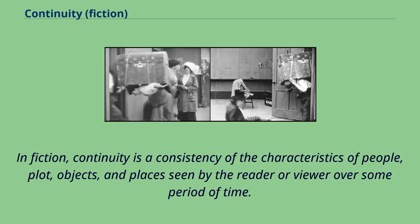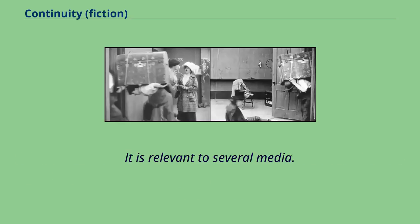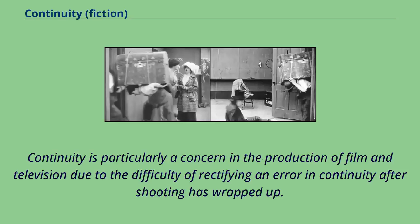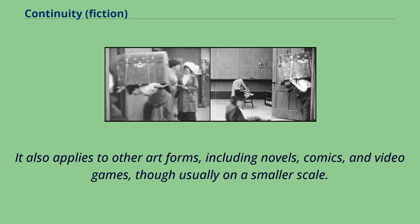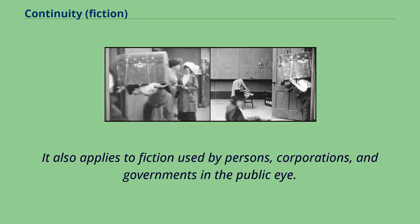In fiction, continuity is a consistency of the characteristics of people, plot, objects, and places seen by the reader or viewer over some period of time. It is relevant to several media. Continuity is particularly a concern in the production of film and television due to the difficulty of rectifying an error in continuity after shooting has wrapped up. It also applies to other art forms, including novels, comics, and video games, though usually on a smaller scale. It also applies to fiction used by persons, corporations, and governments in the public eye.